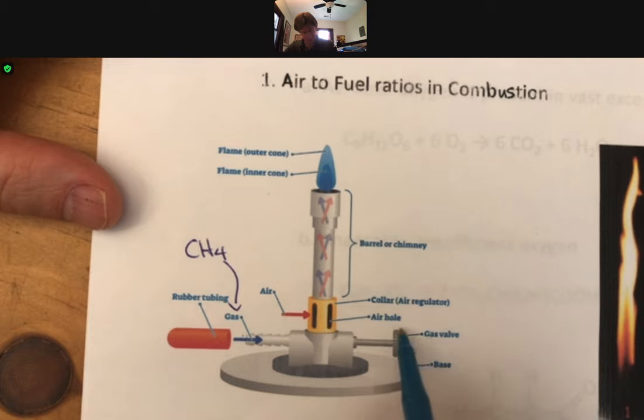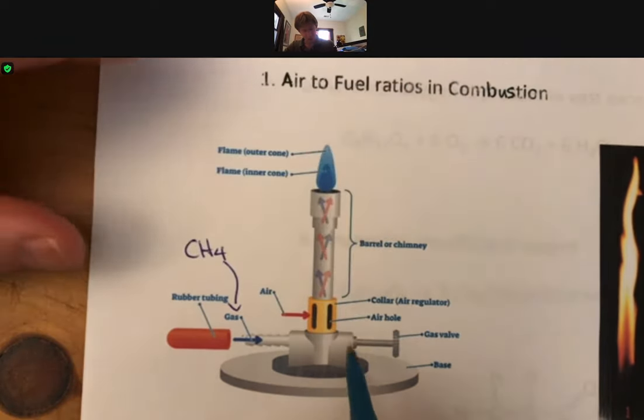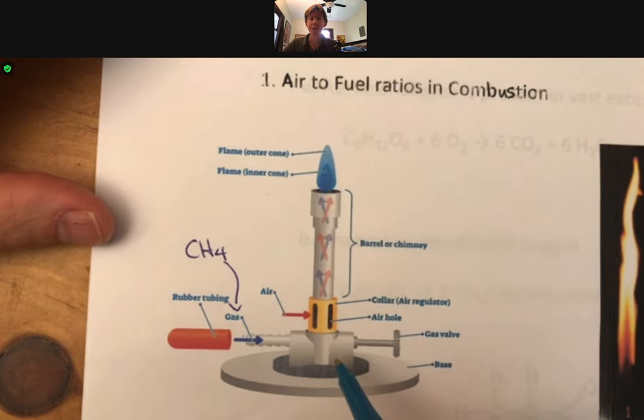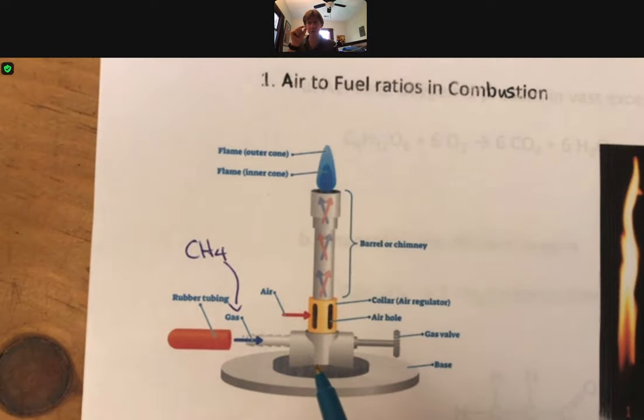The gas is represented as the blue arrow, and they're mixing as they come up here. By using the gas valve you can control the amount of gas, and by turning this you can control how much air is getting into the Bunsen burner because these holes you can partially close them if you want.